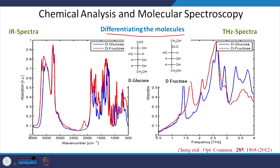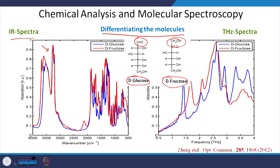One application of terahertz is differentiating molecules. For example, glucose and fructose are almost the same in chemical composition — the only difference is that glucose has an aldehyde group and fructose has a ketone group. Most bonds are similar: CH bond, COH bond. In IR spectroscopy you do not see much difference between them, but in terahertz you see that they both have distinct absorption curves. That is the beauty — you can differentiate molecules that look almost the same in IR spectroscopy.